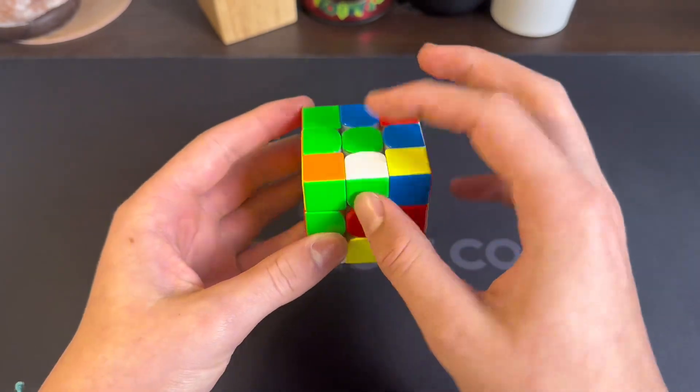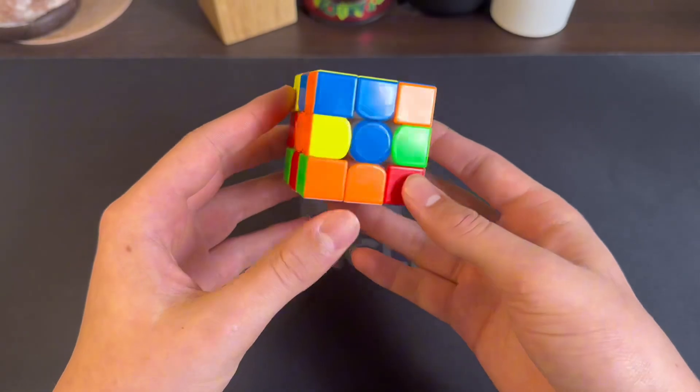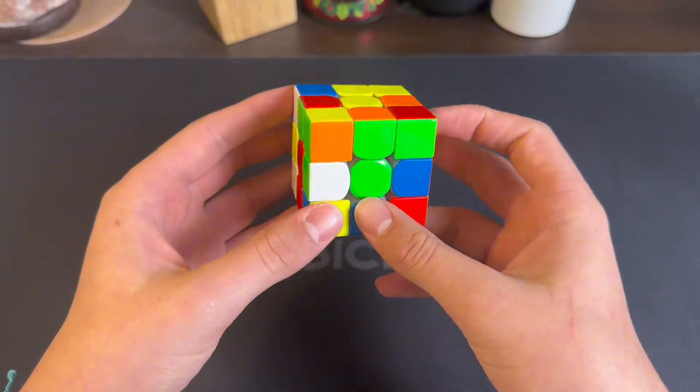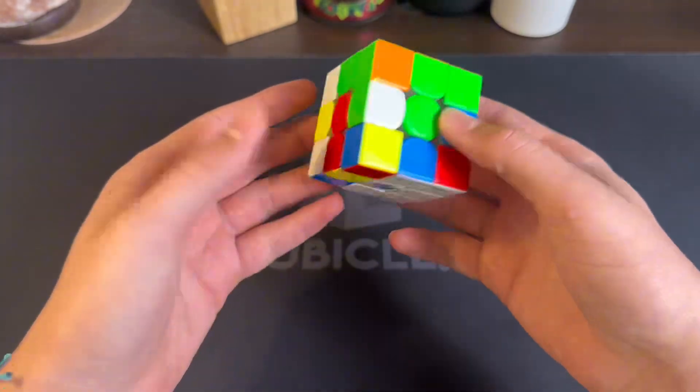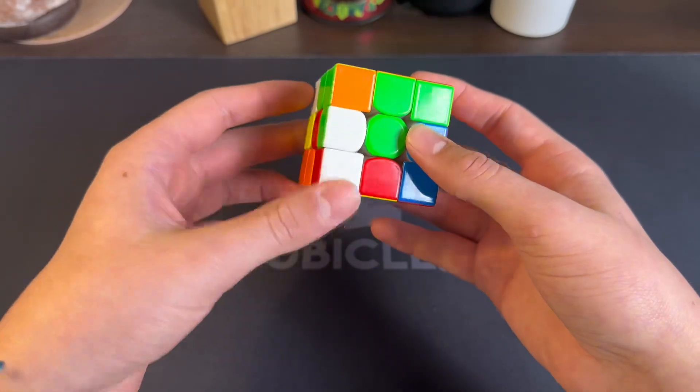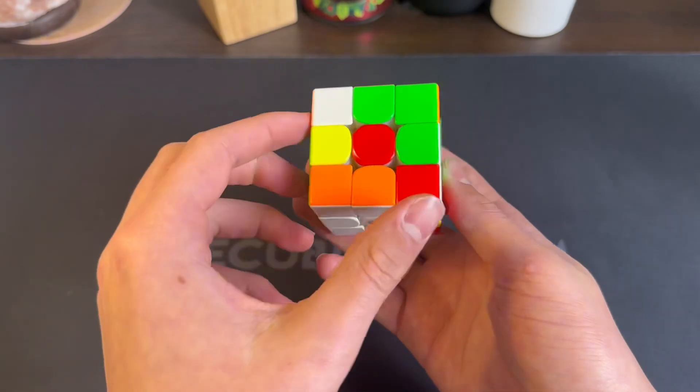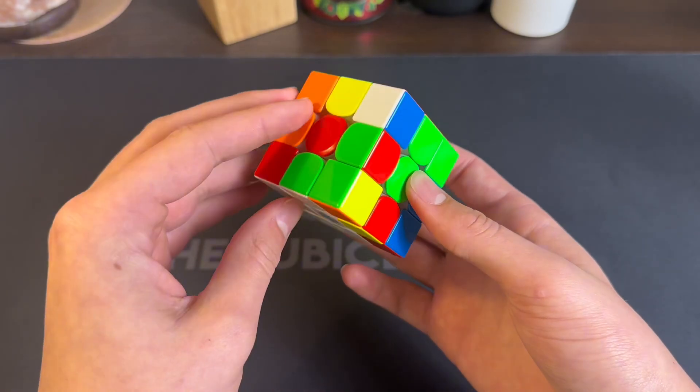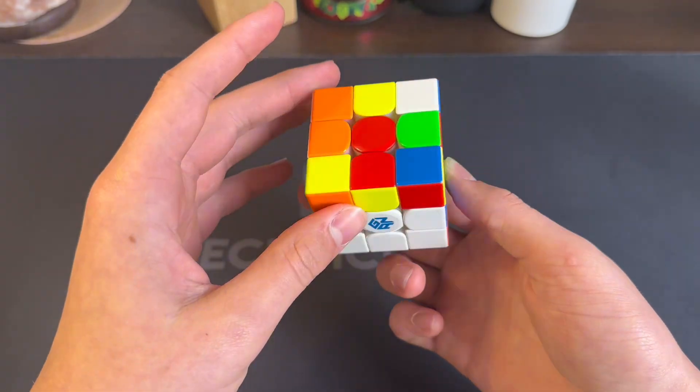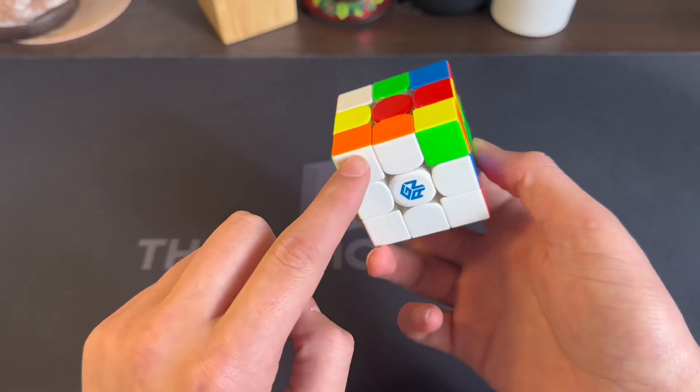So I would start by probably facing green right here, and I'm going to do a D move to put green in place next to red right here. Then do an L and then a D prime and then L prime, and that solves the cross plus this corner.